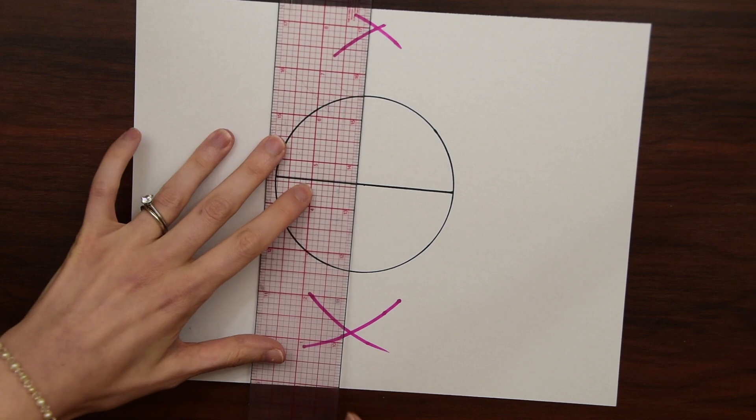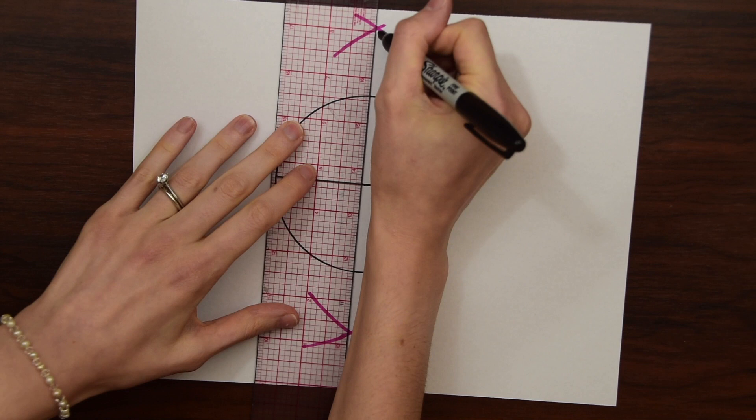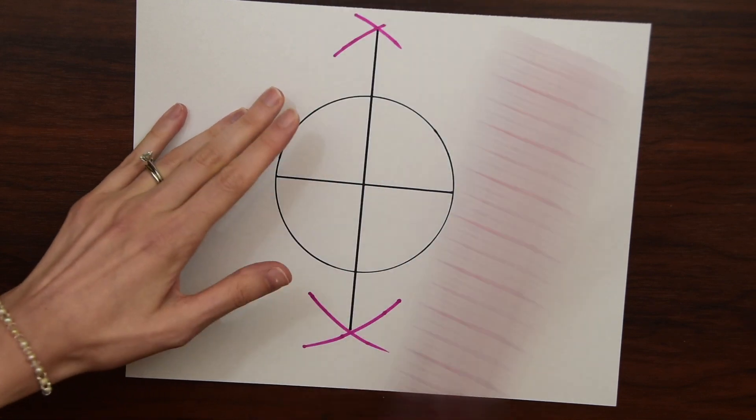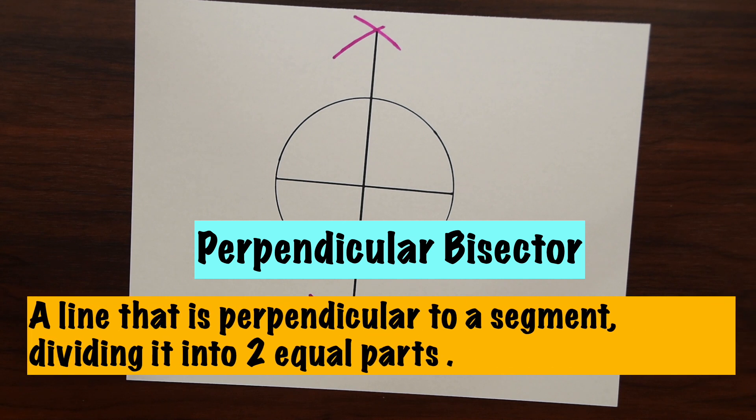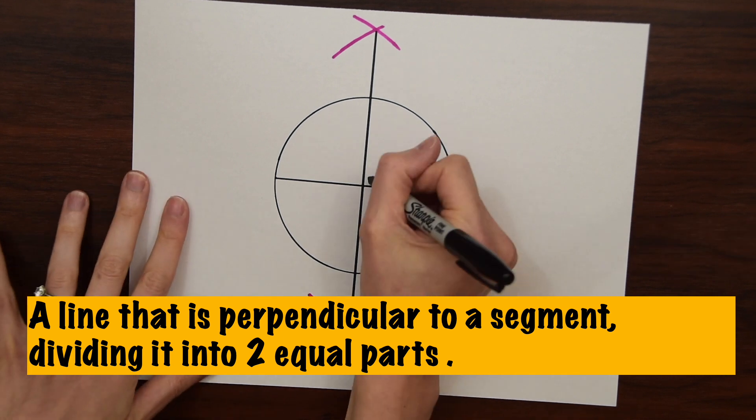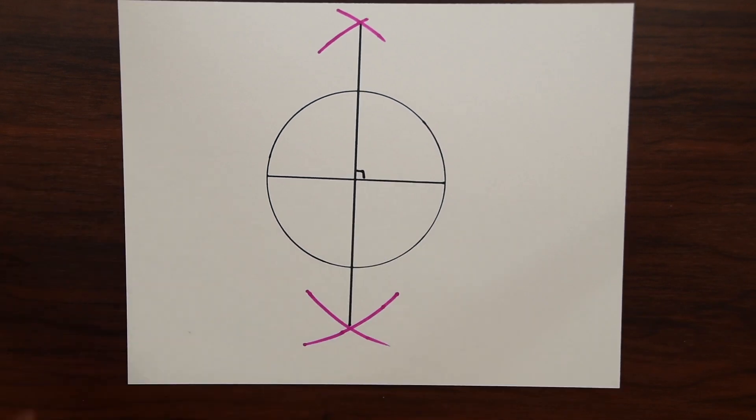So now we're just gonna take a ruler and draw a line from each point. This is actually called a perpendicular bisector which is a line that we made that cuts the diameter in half and forms a 90 degree angle. So these are all 90 degree angles.